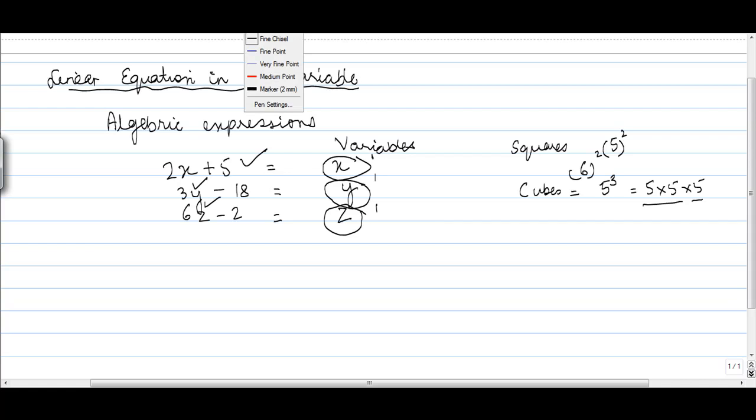In these types of equation, where the power of the equation is 1 are known as linear equations in a single variable.